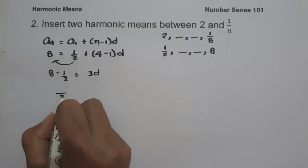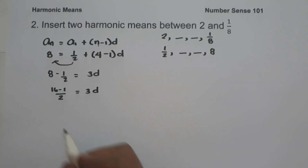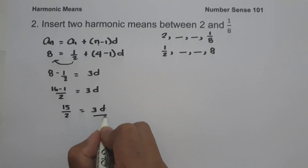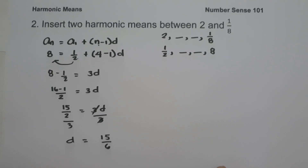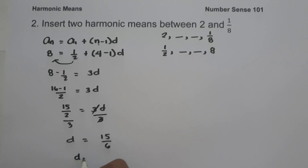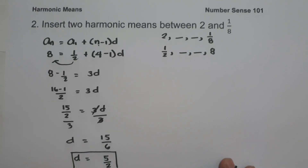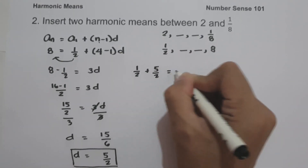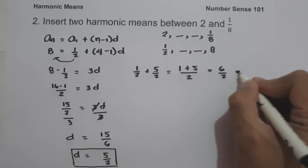Multiplying both sides by 2: 16 minus 1 equals 3d, so 15 over 2 equals 3d. Dividing both sides by 3, the common difference d is 15 over 6, which simplifies to 5 over 2. To find the next term, we add d to the first term: one half plus 5 over 2. With the same denominator, that is 6 over 2, which equals 3. This is our second term in the arithmetic sequence.